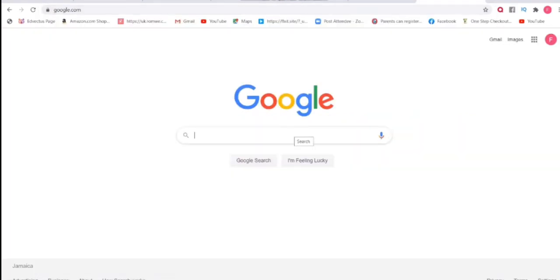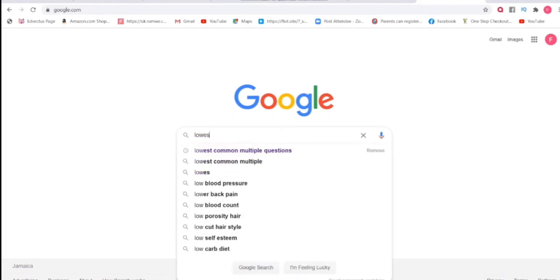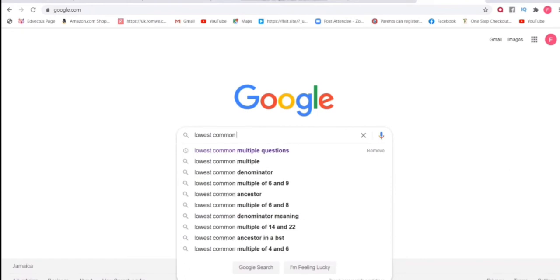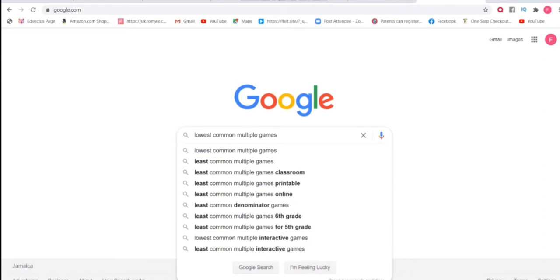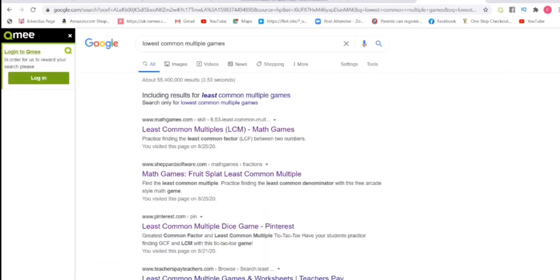I am going to type in lowest common multiple games. And you see some results coming up and I'm just going to go ahead and click on the first one here.